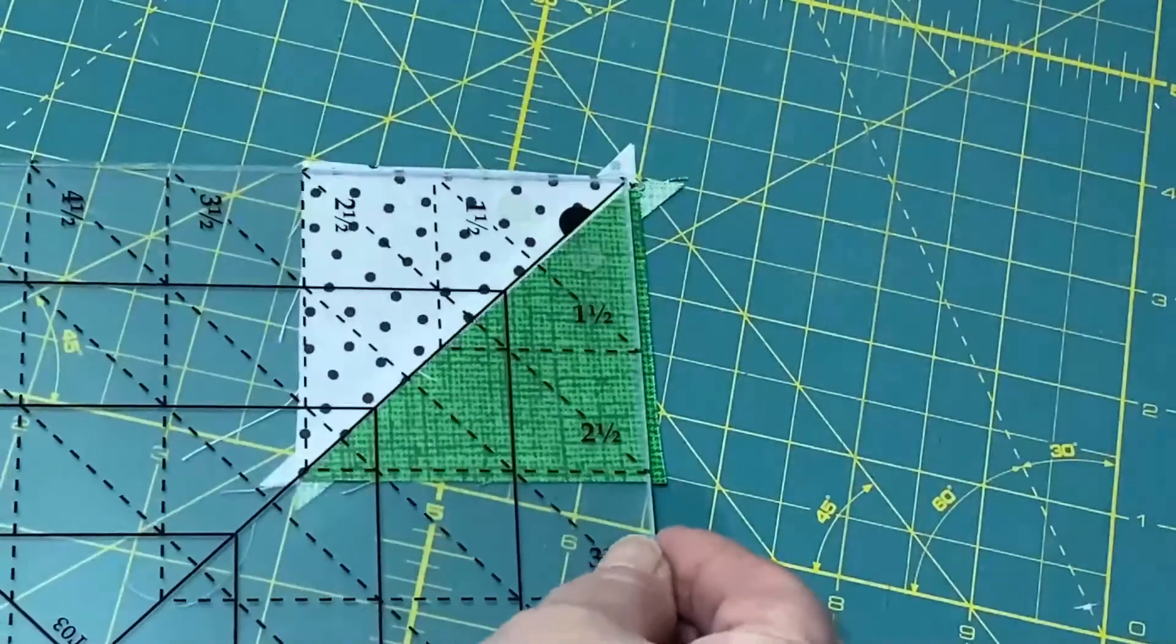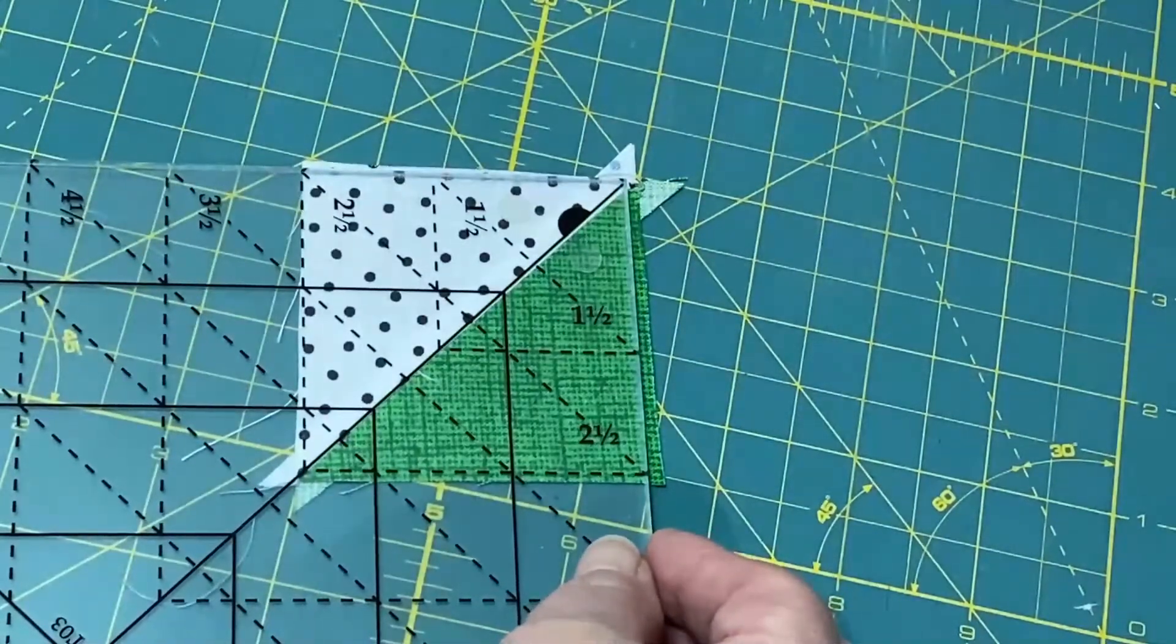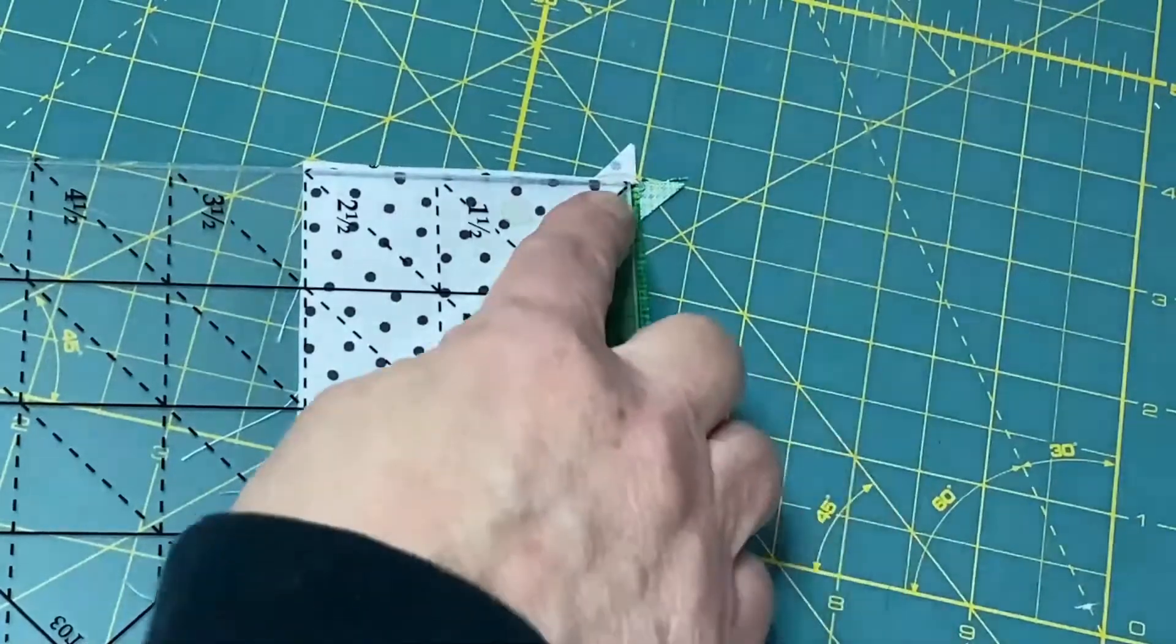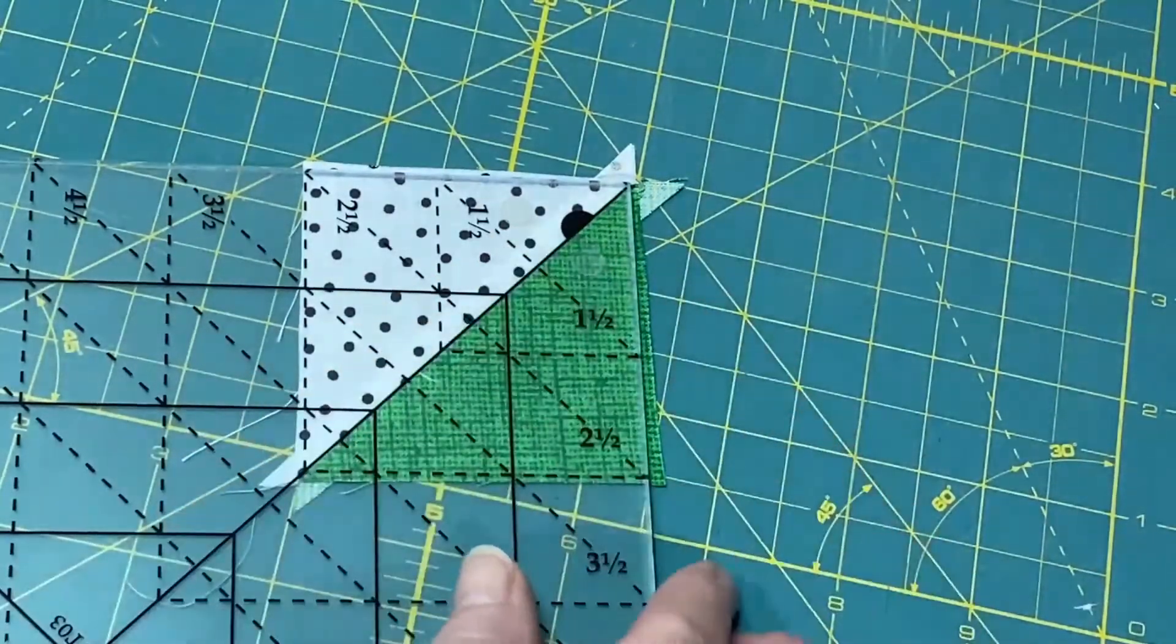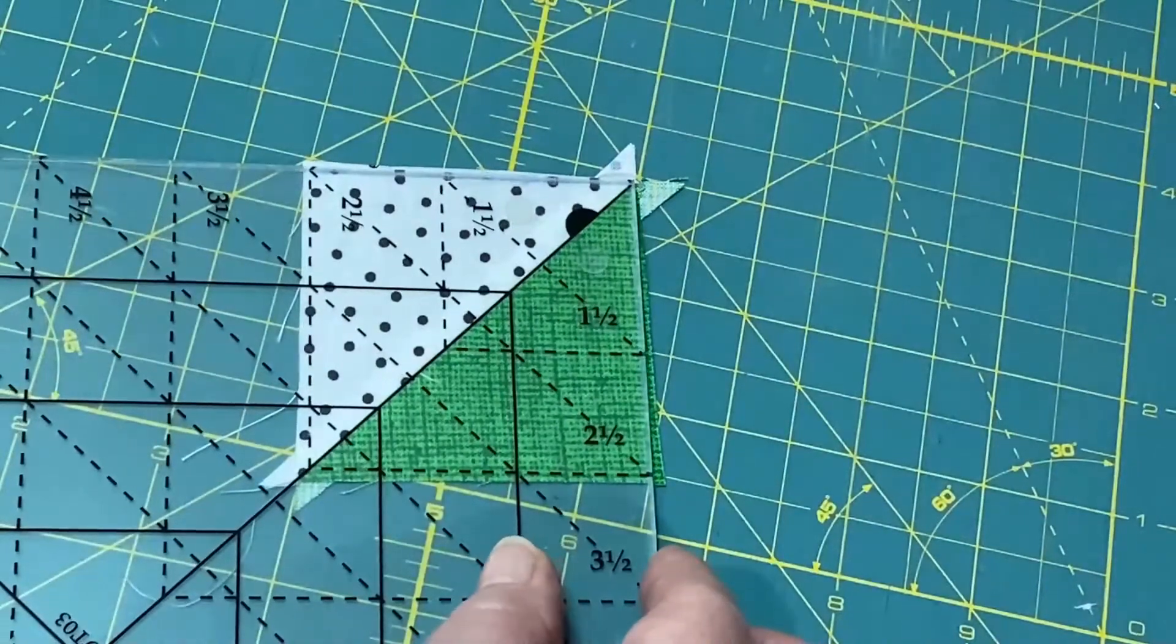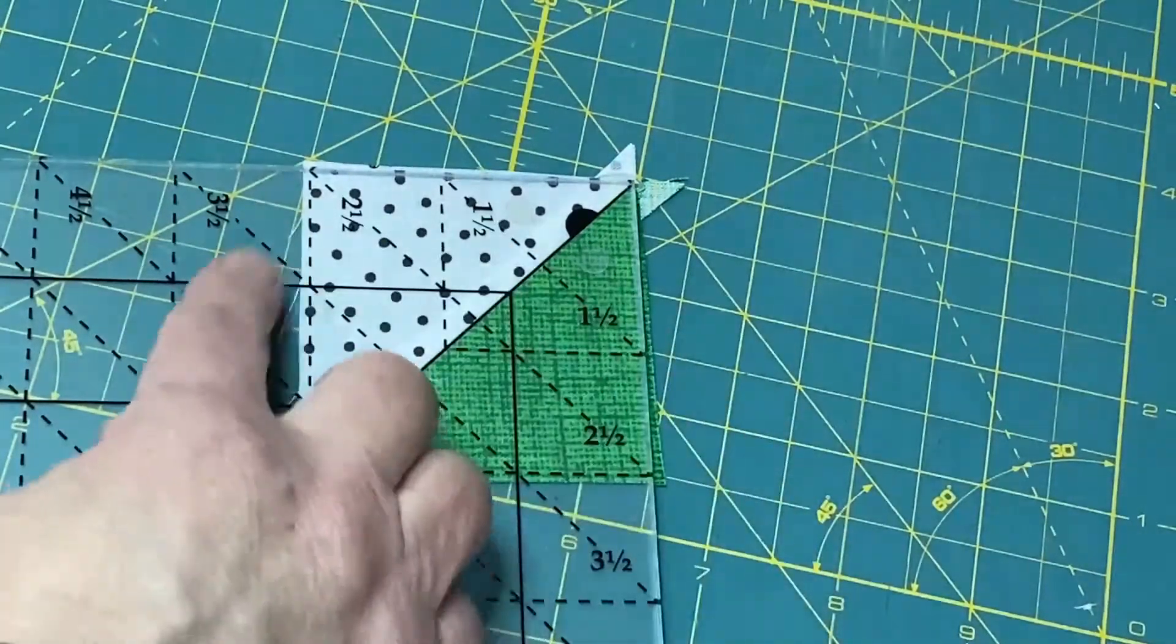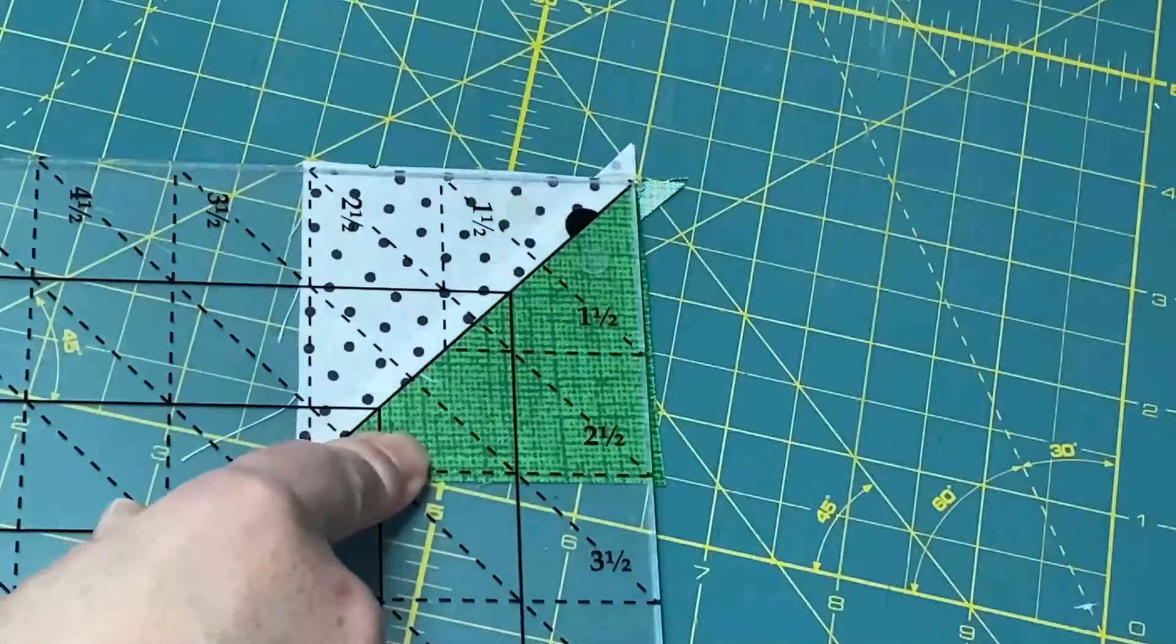I'm going to place my Tucker Trimmer on top of my half-square triangle unit. I'm going to match up that diagonal seam line with that 45-degree line, and I'm looking at my desired size to make sure I've got a little bit of trimming room all the way around.